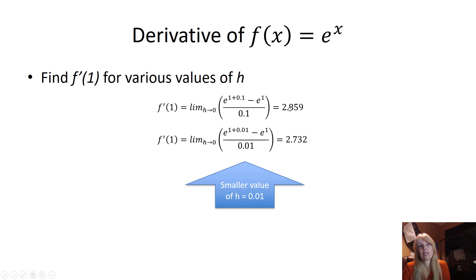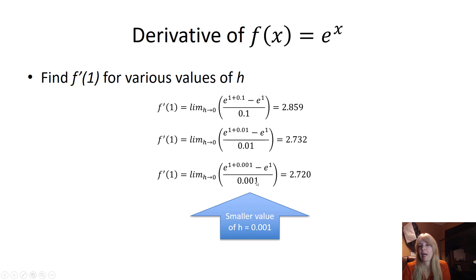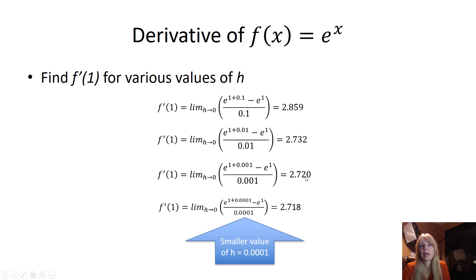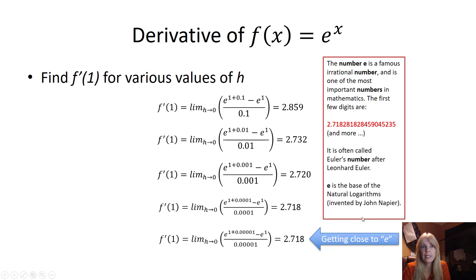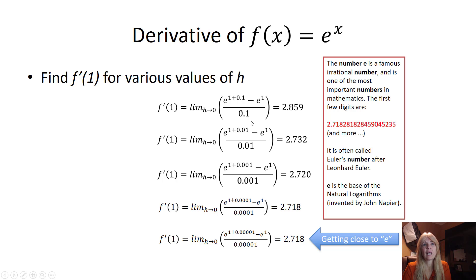This goes back to our limit definition. If I do this I get 2.859; make the gap smaller — 2.732; make it smaller again. All I'm doing is putting these in my calculator. As h gets smaller and smaller it looks like it's approaching some value — do you recognize that? That's e, Euler's famous number, 2.71828... As I let h get smaller and smaller, it looks like I'm just getting back to e.